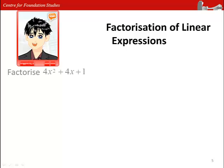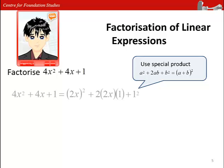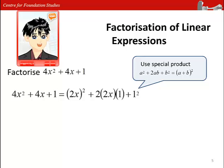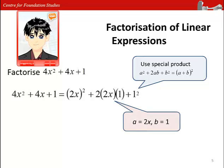Factorize 4x² + 4x + 1. We can rewrite this in the form (2x)² + 2×2x×1 + 1². From this expression, we can see that a = 2x and b = 1. Hence, the expression can be factorized into (2x + 1)².